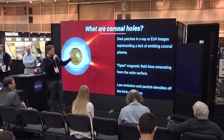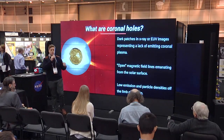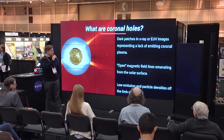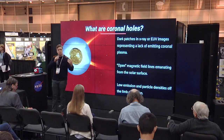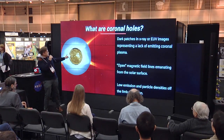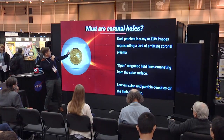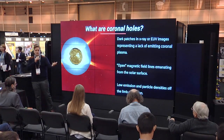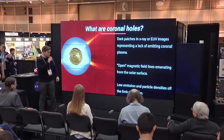So what are coronal holes — what are these dark patches? Initially they were defined as just that: dark patches in the EUV emission, where there's less emitting plasma and the Sun is simply less bright in those areas. But there's also a more theoretical view. It has to do with magnetic fields coming out of the Sun. In this eclipse image you can see rays outlining the structure of the magnetic fields. These open magnetic field lines start at the surface of the Sun and stream out into space, and they define coronal holes as well.